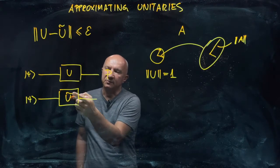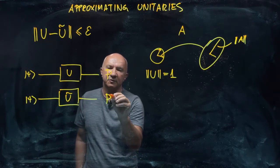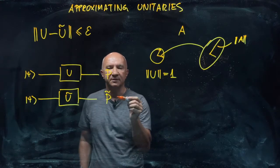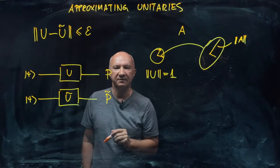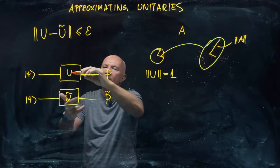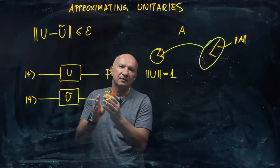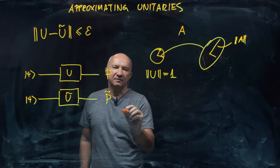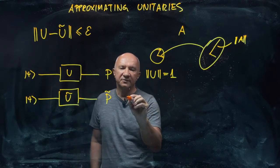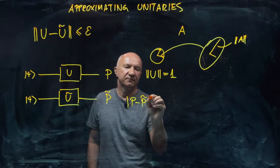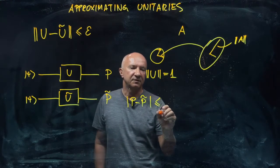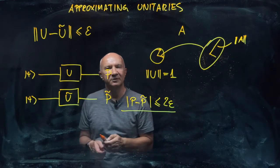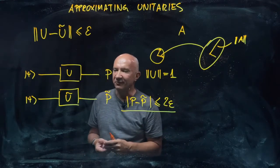So here we just apply u tilde. And we get some other probability of measuring exactly the same property. But we get some probability p tilde. So if the two unitaries are at most epsilon distance from each other, then the difference in probability, p minus p tilde, is going to be smaller than two epsilon. So that's something that I will leave as an exercise for you.